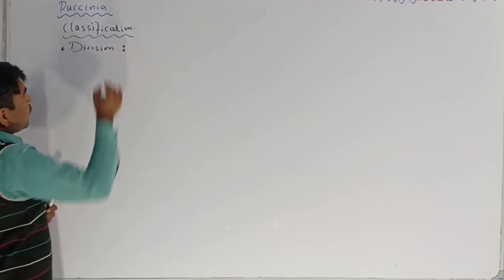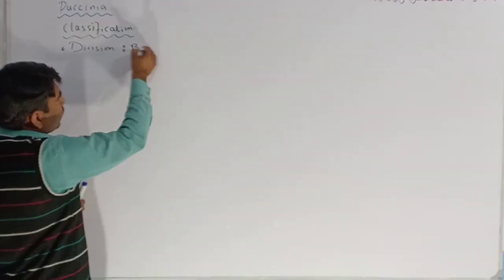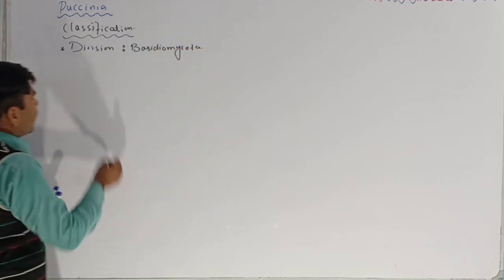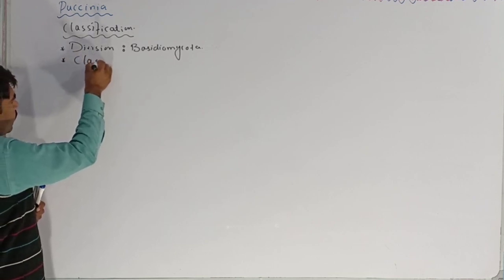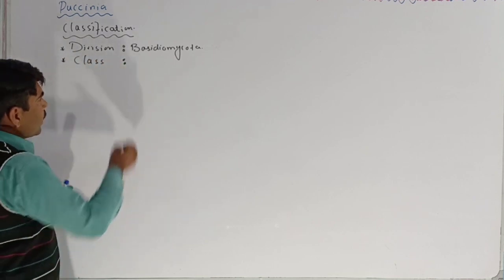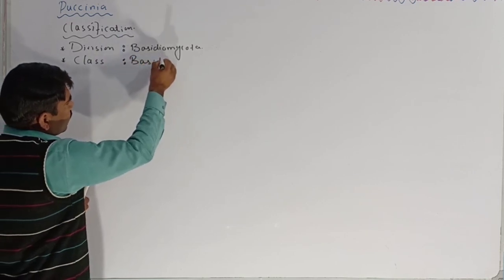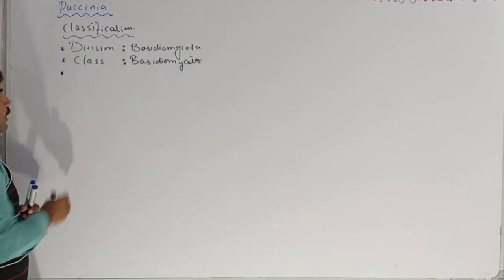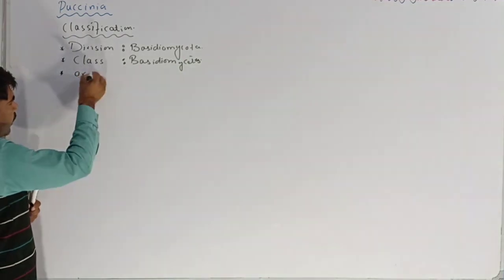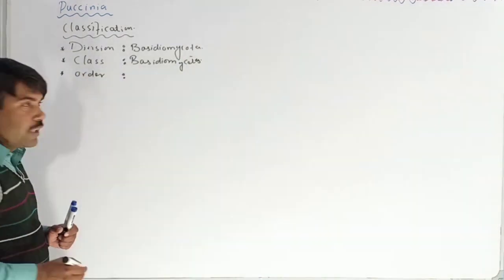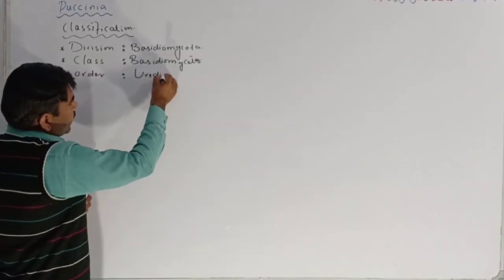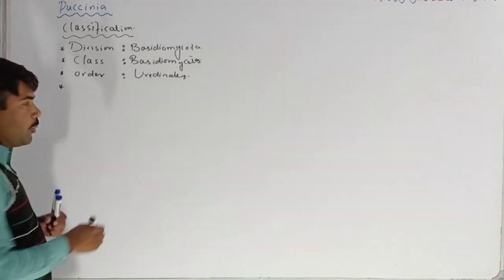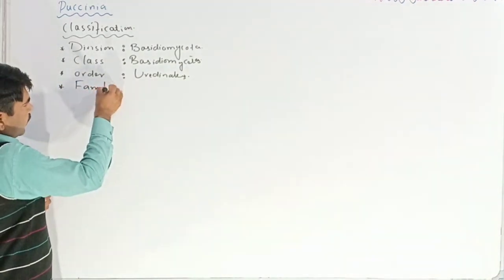The division name of Paksinia is Basidiomycota. The class of Paksinia is Basidiomycetes. After the class, there is an order, and the order of Paksinia is Uredinales.